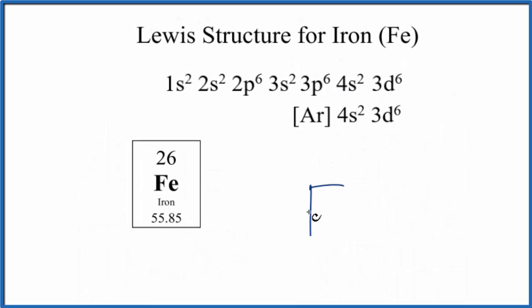We'd write Fe, that's the element for iron, and then we put the eight valence electrons around the iron. That would look like this.